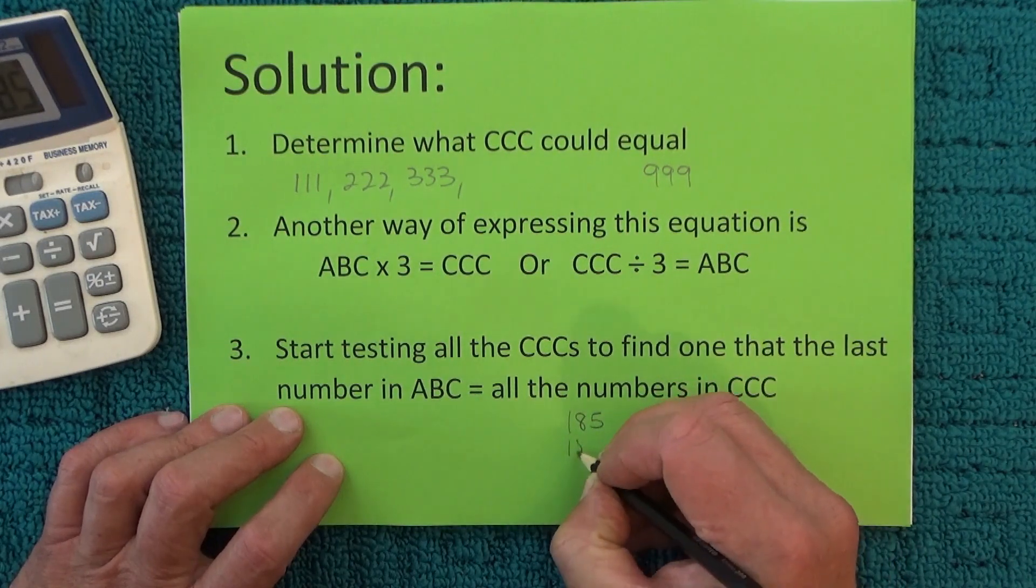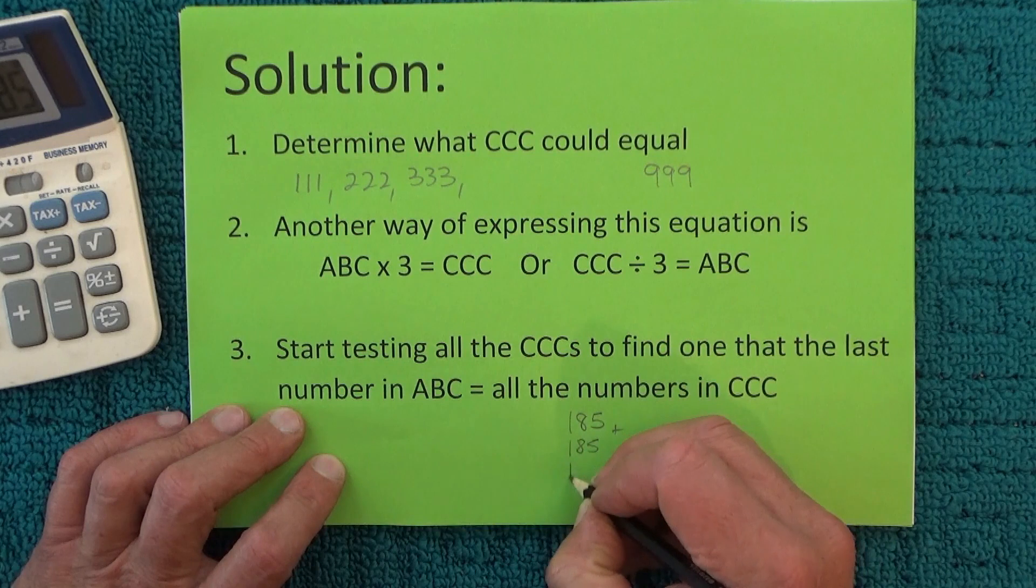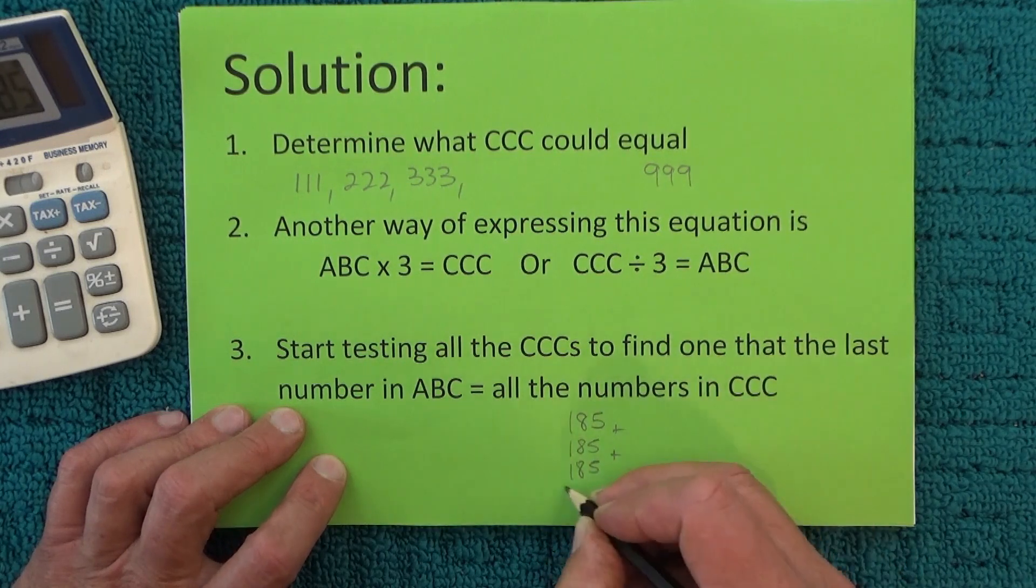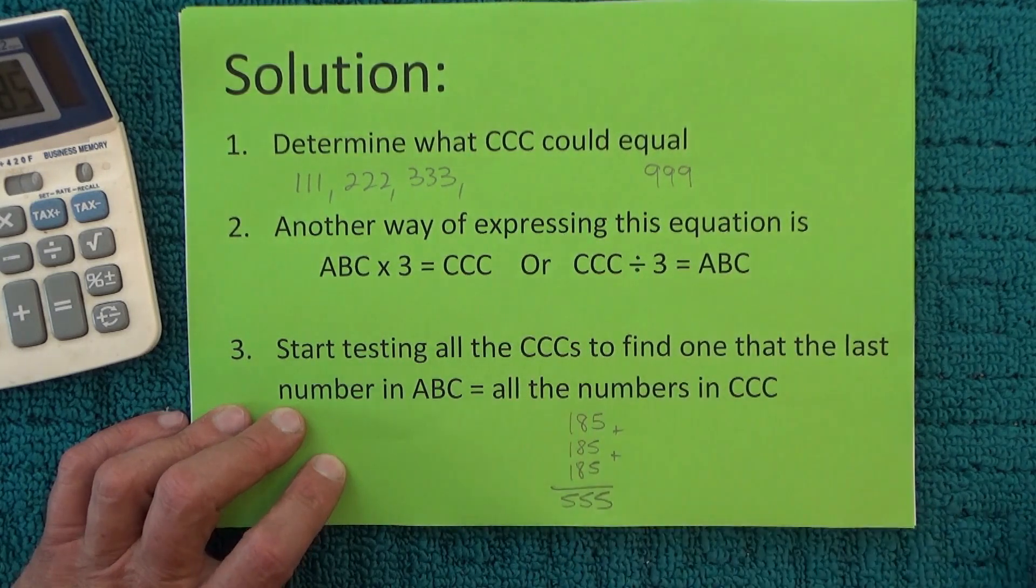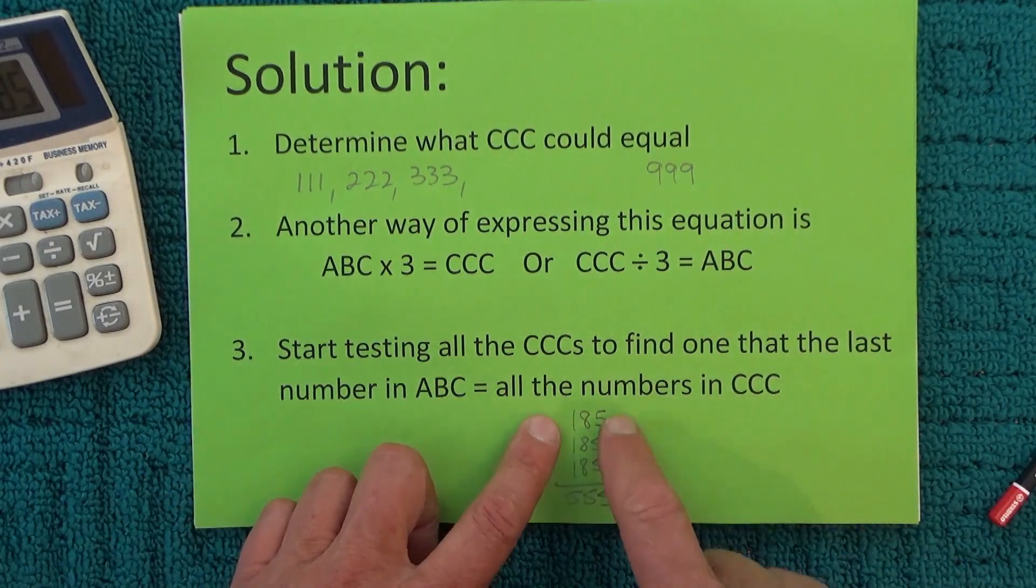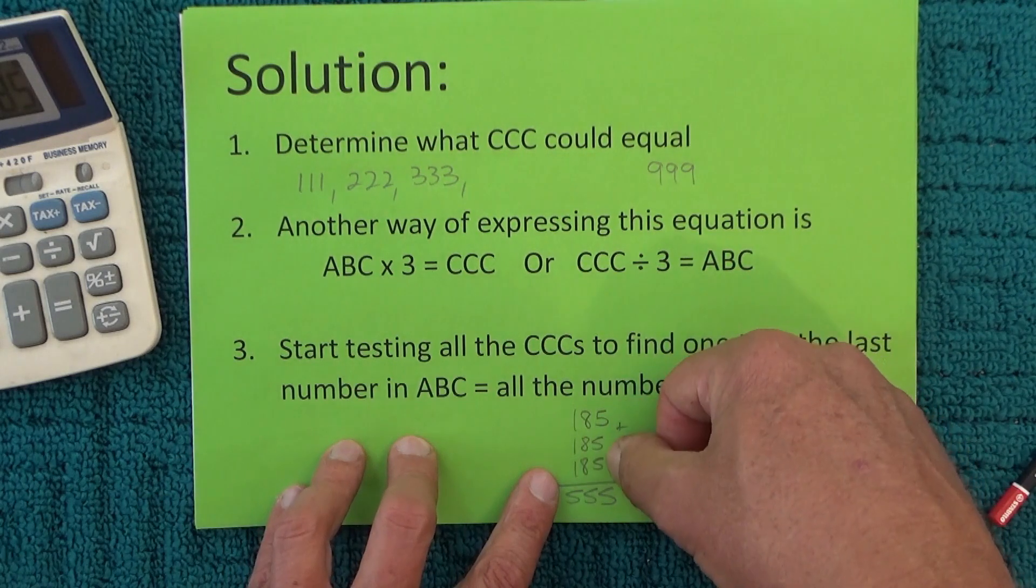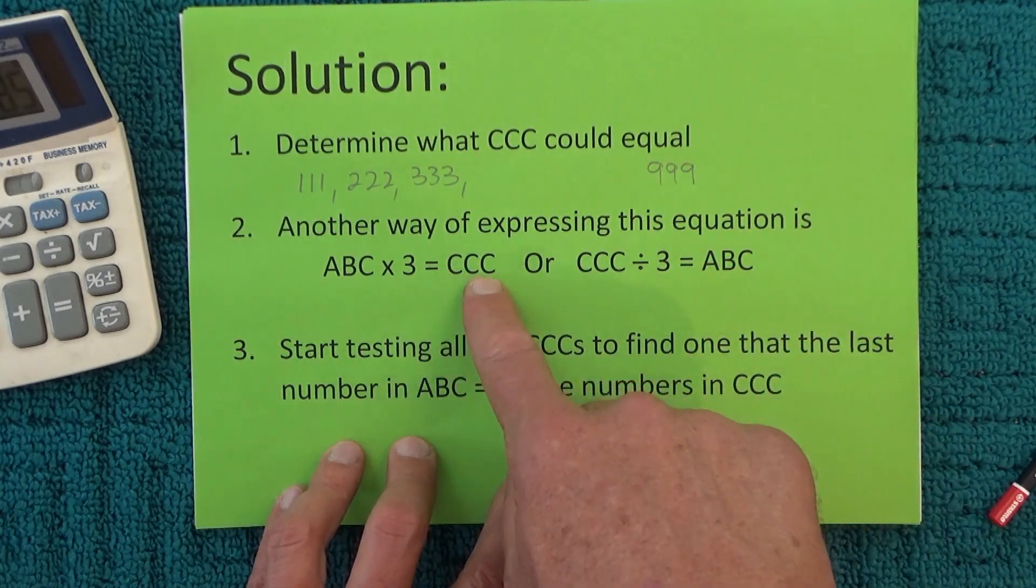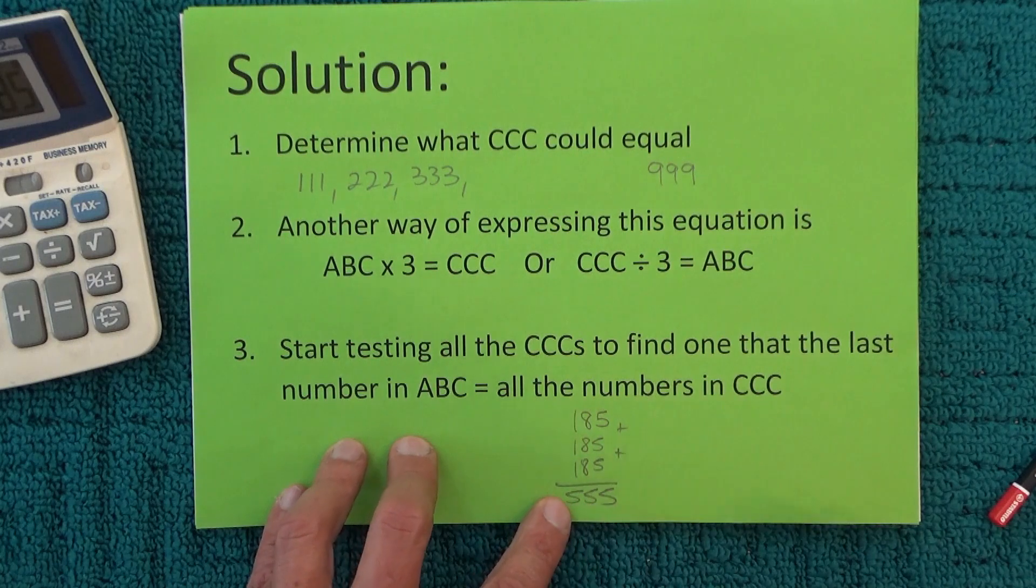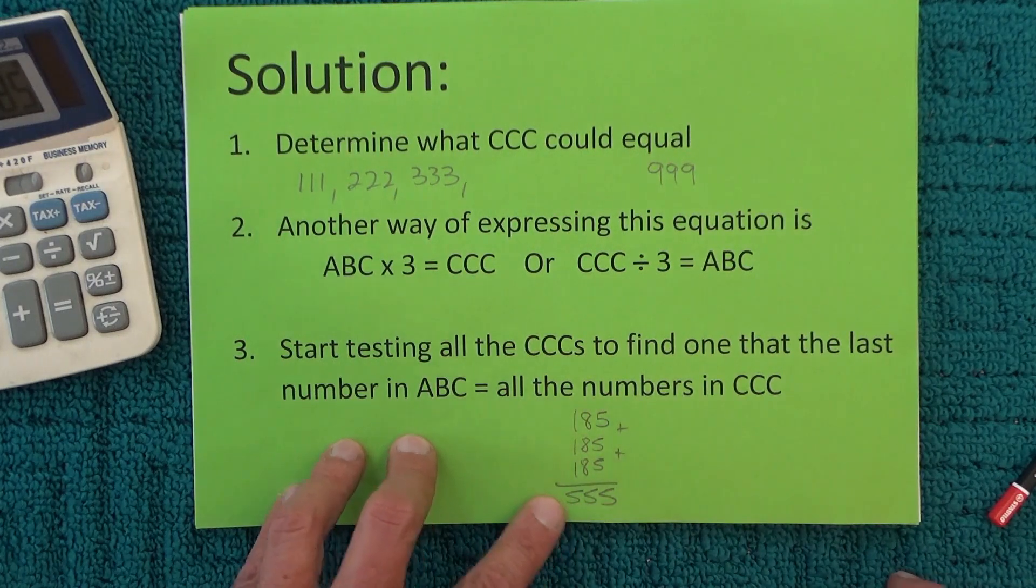185 + 185 + 185 = 555. You can see that C in ABC equals 5, and CCC is also equal to 3 lots of 5.